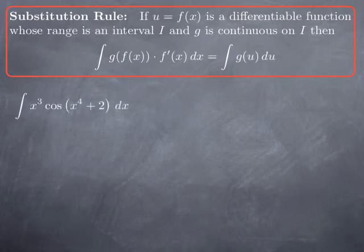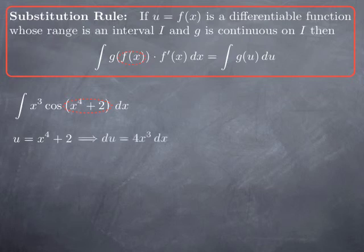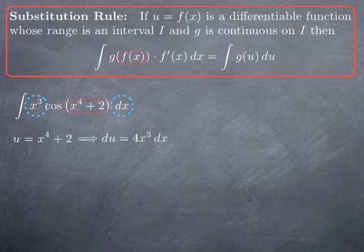Let's look at another example: integrating x cubed times cosine of x to the fourth plus 2. We look at the composite part — cosine of x to the fourth plus 2 — and take the inside part as u, so u equals x to the fourth plus 2. We calculate du: the derivative of x to the fourth plus 2 is 4x cubed, so du equals 4x cubed dx. What we have in the integral is only x cubed dx, so we solve for that: x cubed dx equals 1/4 du.